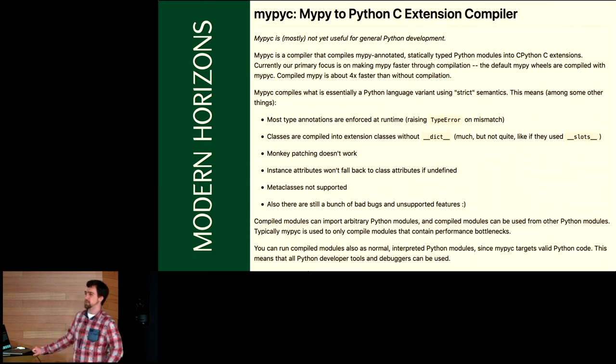You think, isn't that a good thing? Monkey patching obscures what is happening, it is an anti-pattern. But really, you are using it. If you ever write unit tests with the mock module, mock's patch is monkey patching. So the compiler would have to be a bit smarter and recognize use cases like this to allow them in very constrained environments. Instance attributes won't fall back to class attributes if they're undefined. And metaclasses are not supported.